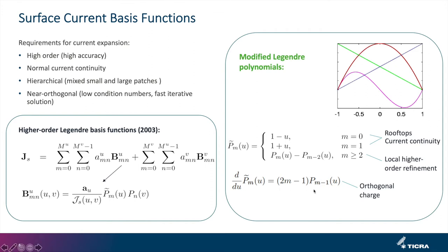From this relation we can see that these modified polynomials result in orthogonal charge — these basis functions are what we would have arrived at if we started with that as a requirement. There are newer basis functions now with slightly better orthogonality but nothing that comes close in terms of simplicity. With these available you can plug them into the method of moments and get a very nice higher order MOM.